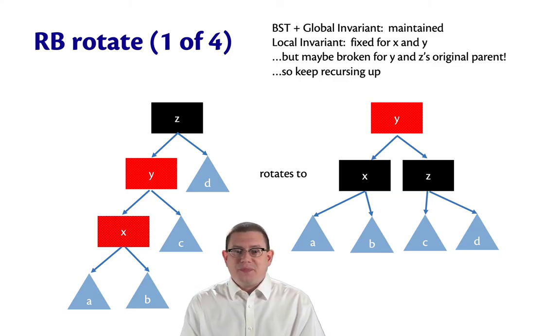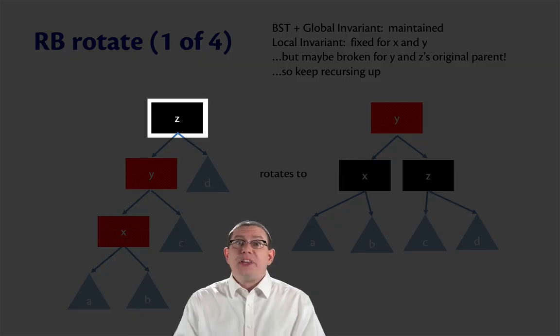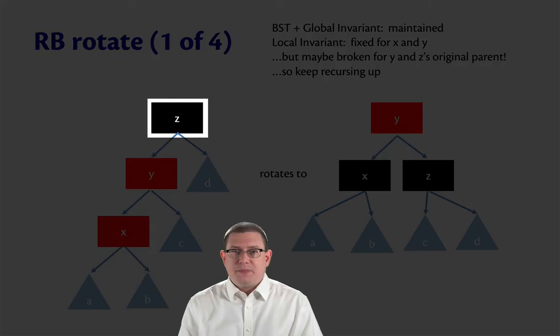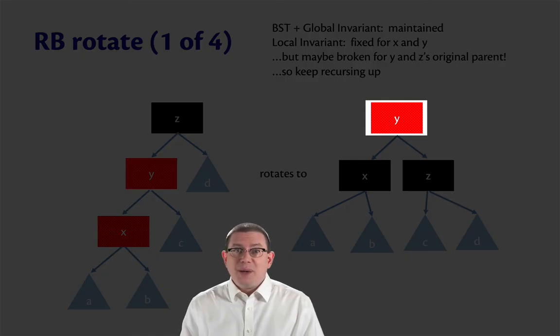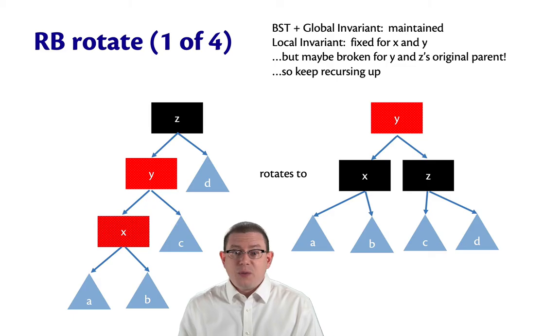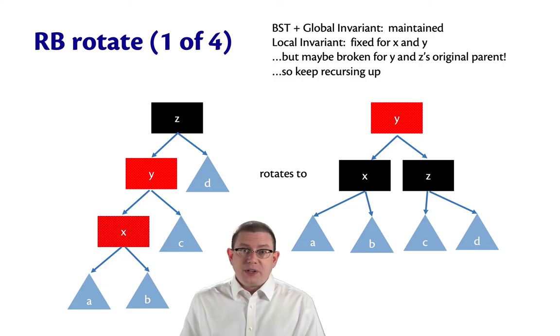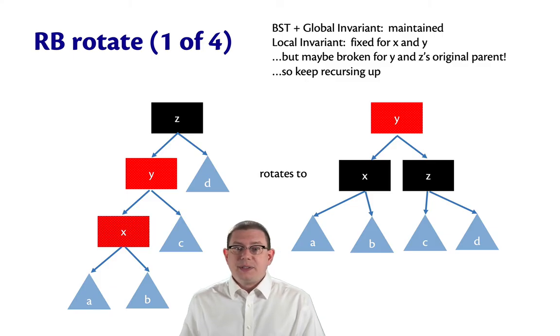But there's a new problem. Z here, the original root of the subtree, was not necessarily the root of the entire red-black tree. It itself might have had some other nodes above it. So when we return this new tree with a red root, we might have just created a new violation, because the parent of Z in the original tree might have been red. In which case, Y would then be a second red node right below it. So we need to keep recursing up, go to whatever the original parent of Z was from the tree, rebalance, keep doing this all the way up to the root of the entire red-black tree.